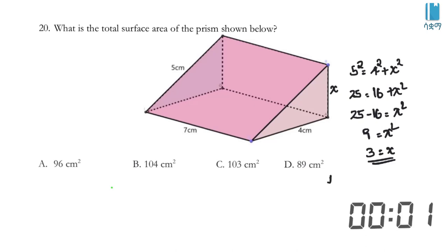Now we can calculate the area of the triangle. Area equals half base times height, which is 1/2 × 3 × 4 = 6 centimeters square. This is the area of one triangular face.